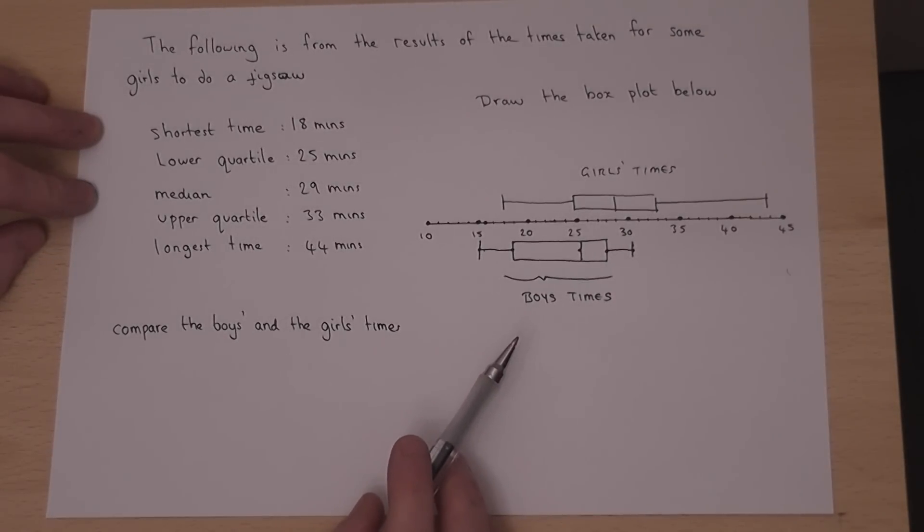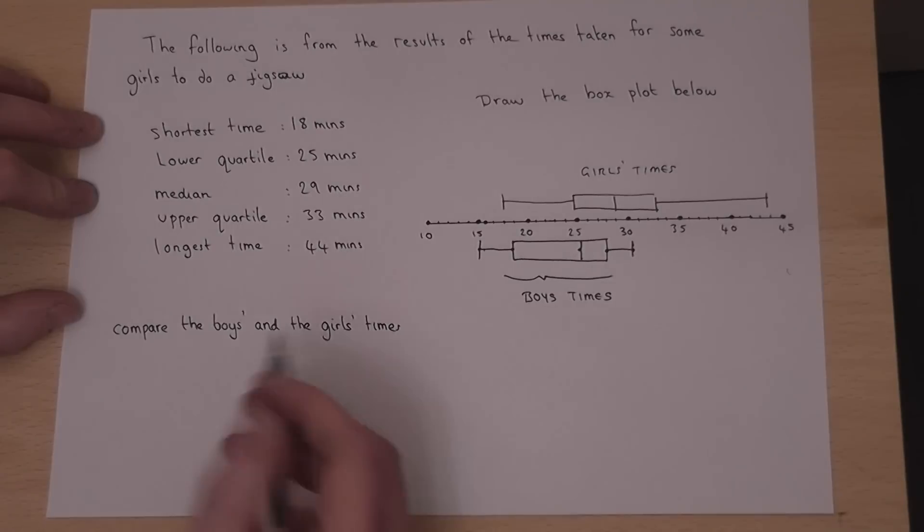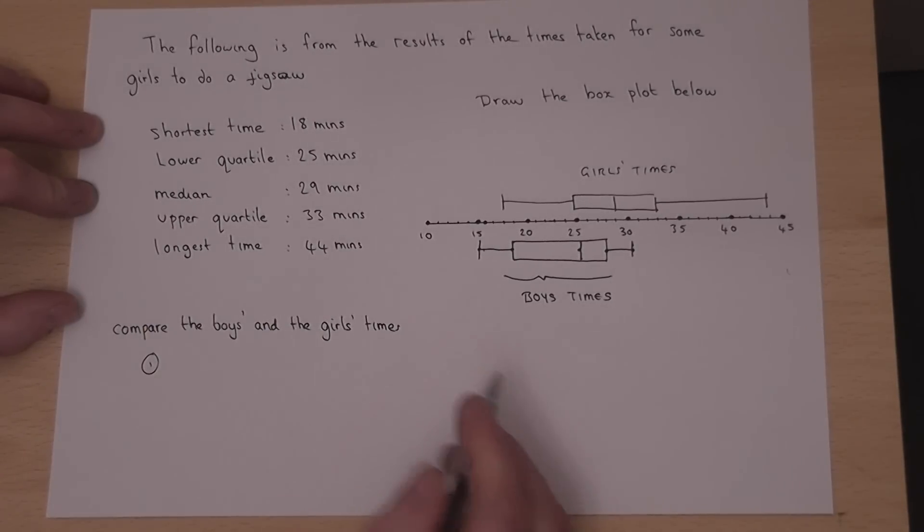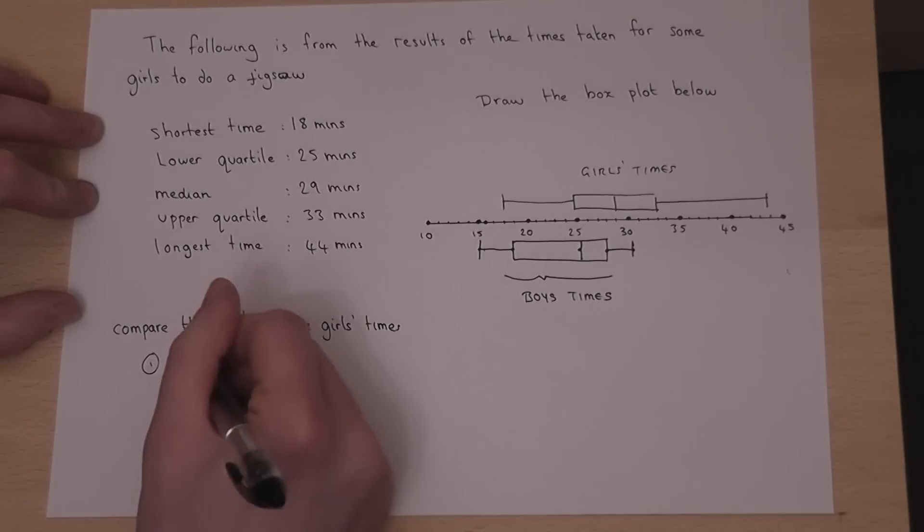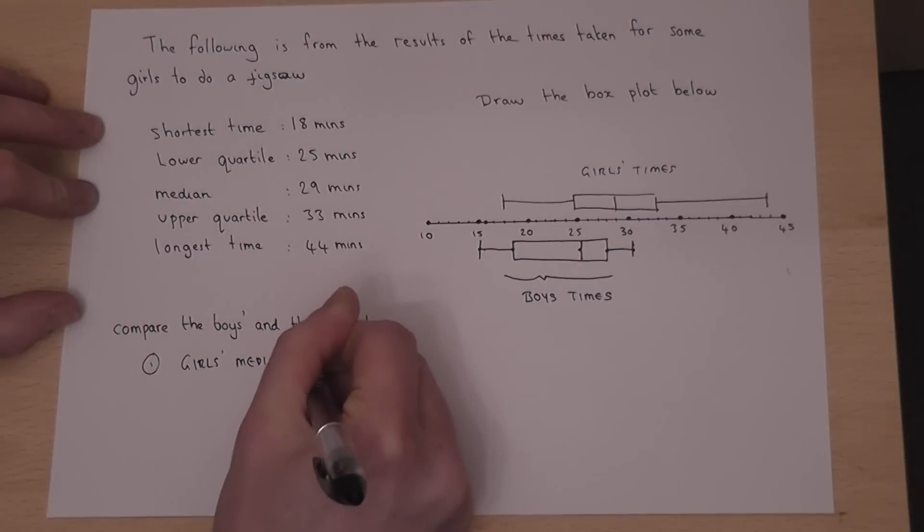In the next part, we're asked to compare the boys' and the girls' times. And we're going to make two distinct comparisons. Now the first comparison is always the median, and the girls' median, as we know, is 29.